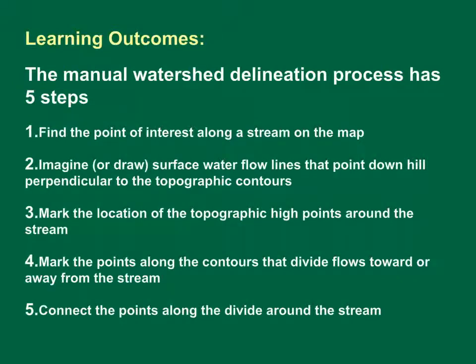In this module, we learned the five steps for manual watershed delineation. First, find the point of interest along a stream on the map. Second, imagine or draw surface water flow lines that point downhill perpendicular to the topographic contours.